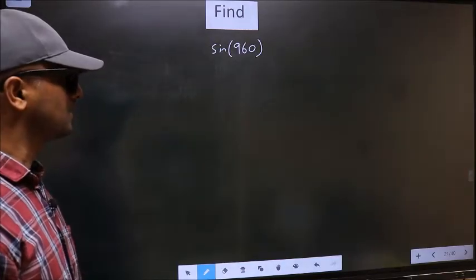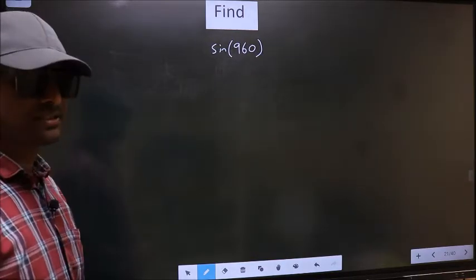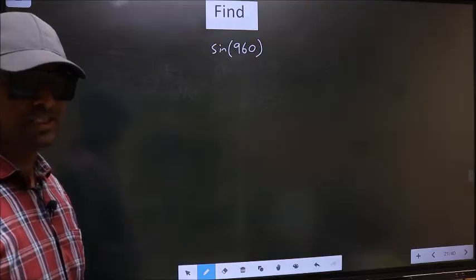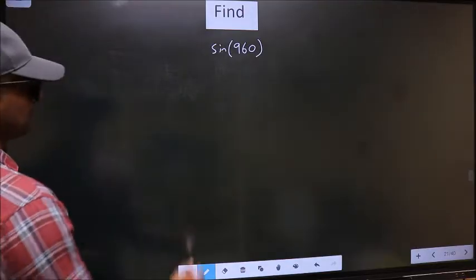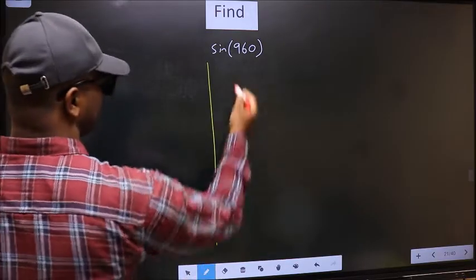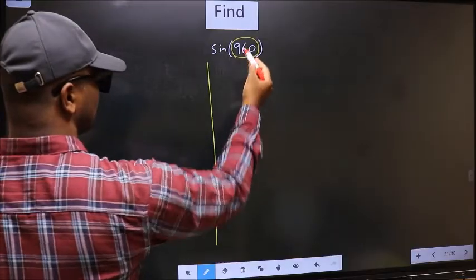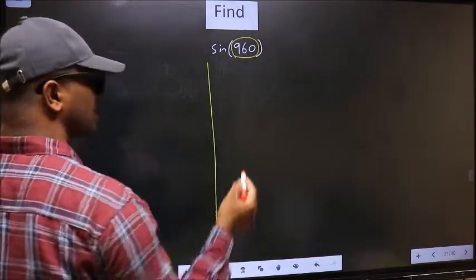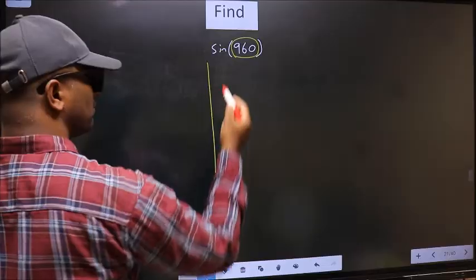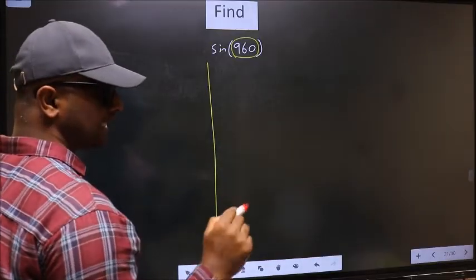Find sin 960. To find this, we should follow this method. See, here we have 960. Now you should check 960 lies between which two multiples of 180.